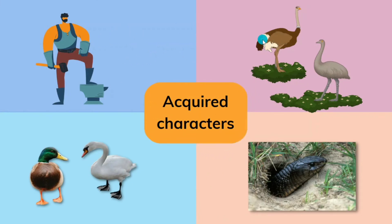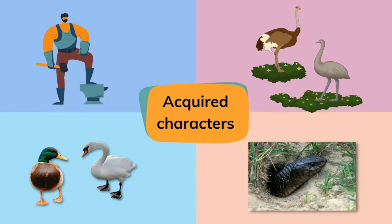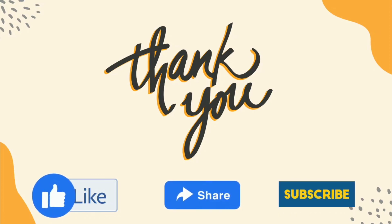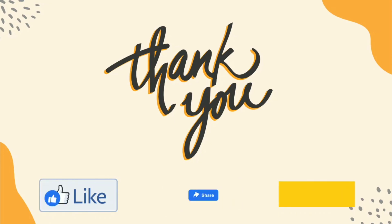All the examples — iron smith, ostrich and emu, duck and swan, and snake — show that they have certain special characters that they acquired. These are known as acquired characters, and these acquired characters are passed from one generation to the next, since they are present inside the genetic material. This theory is known as the inheritance of acquired characters, or Lamarckism, since it was proposed by Lamarck. If you liked this video, hit the like button, subscribe to our channel for more content, and share this with your friends. Until then, this is Mansi Joshi signing off.